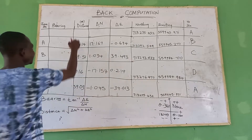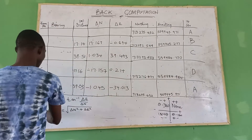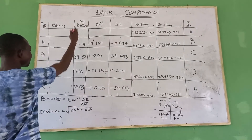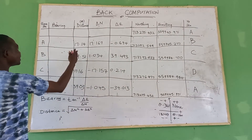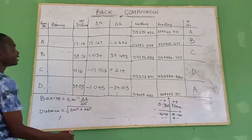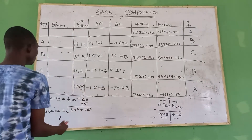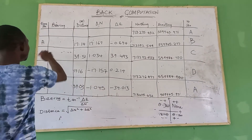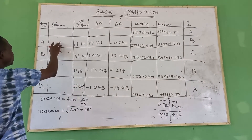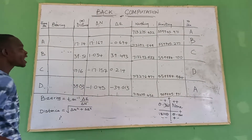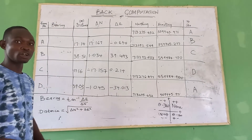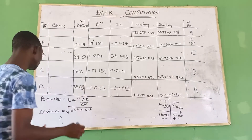So that is the formula for calculating your distance. Now that we have our distances, the next thing to do is to calculate your bearing. To calculate your bearing, you use the formula: bearing equals arctan of delta easting divided by delta northing.